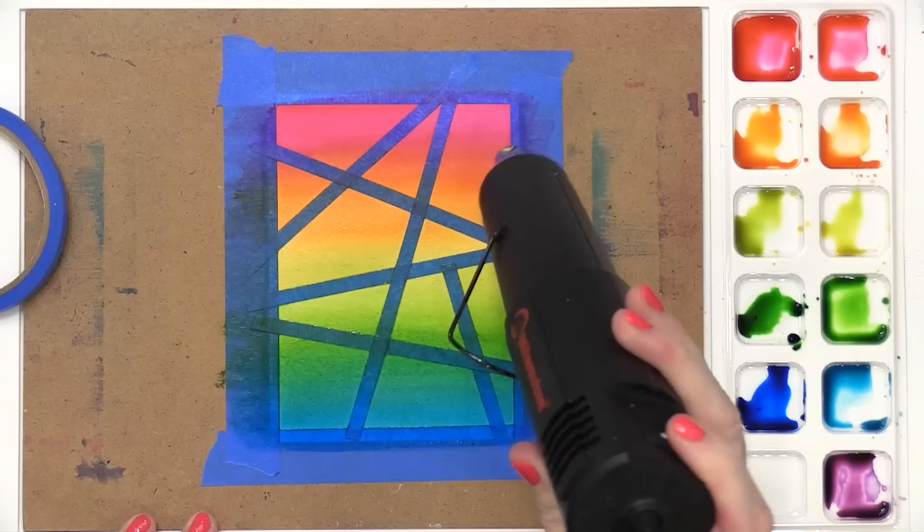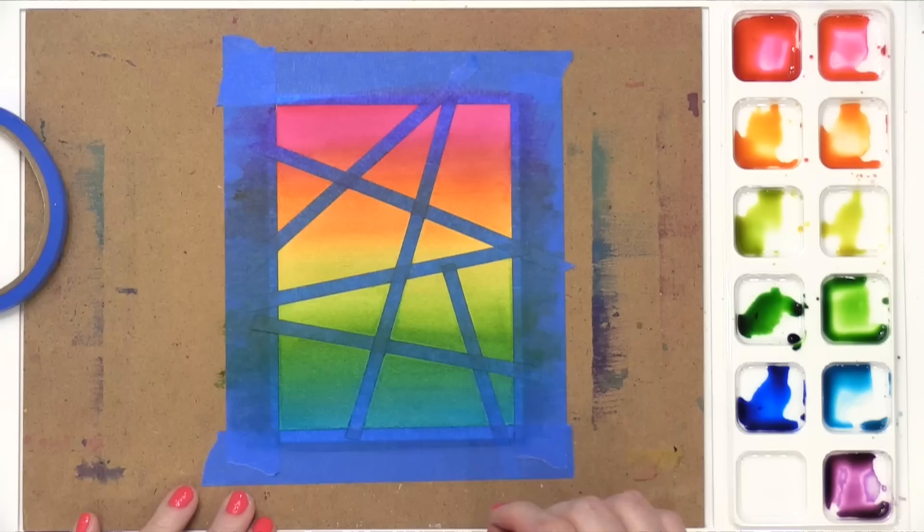As you might know, watercolor generally dries down, and the color becomes a little bit more muted. So if you want a really intense color blend, you do have to do it in layers.